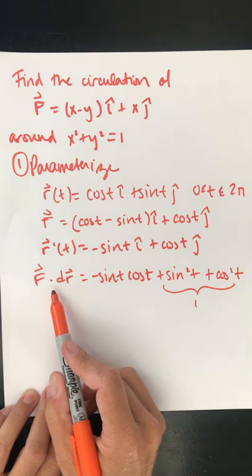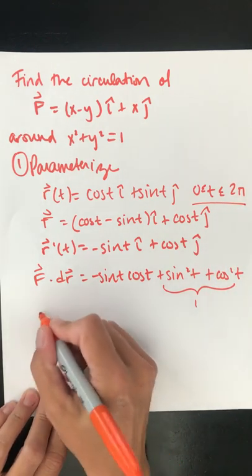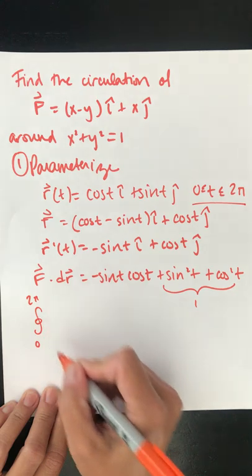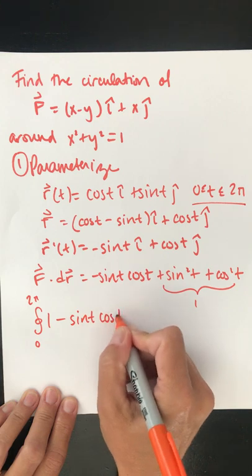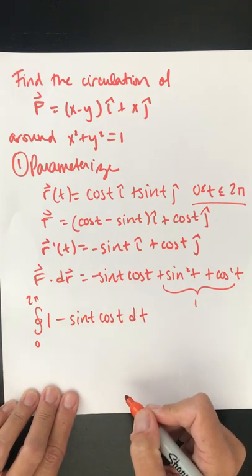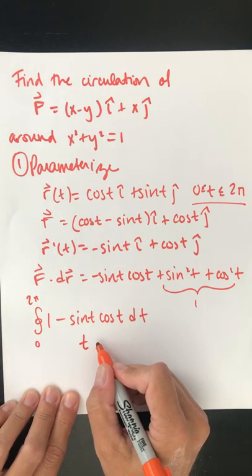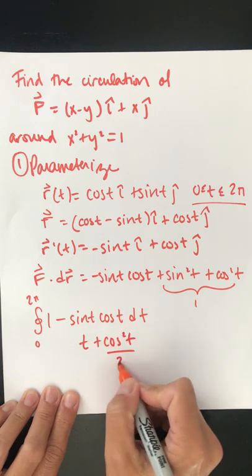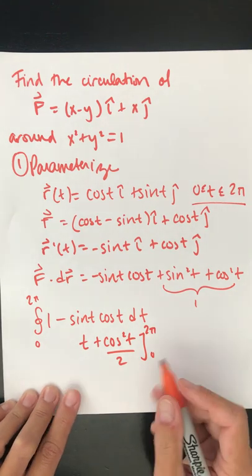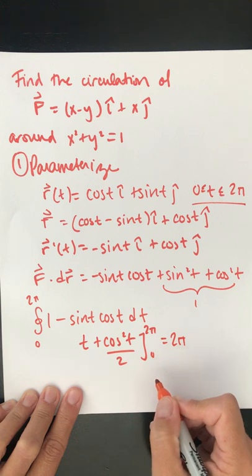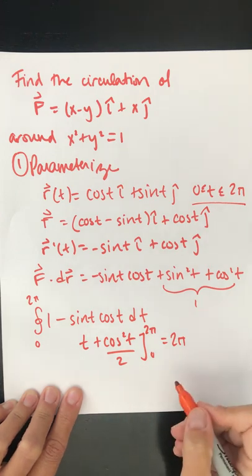Now I just need to integrate f dot dr around the whole circle, from 0 to 2 pi. I'm going to take the integral from 0 to 2 pi of 1 minus sine t cosine t dt. So this becomes t plus cosine squared t over 2 from 0 to 2 pi. So I get 2 pi plus 1 half minus 0 minus 1 half, so just 2 pi.